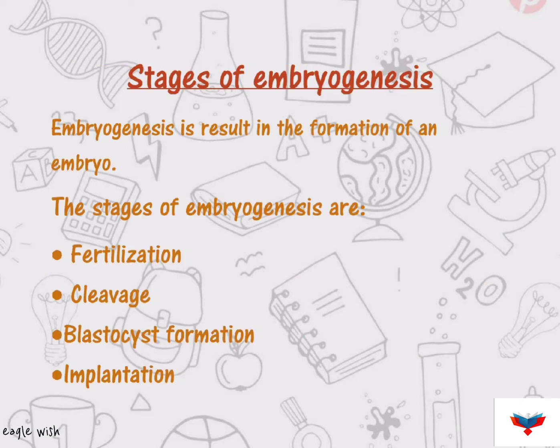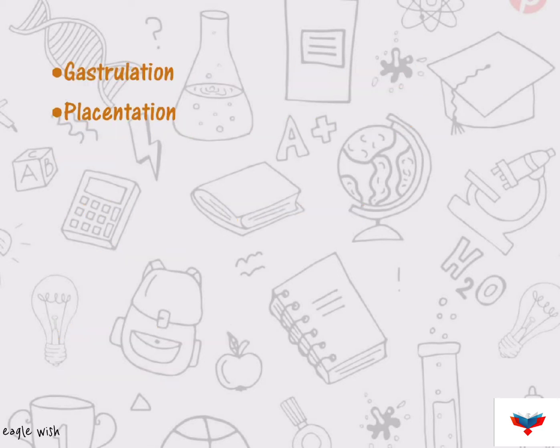The stages of embryogenesis include fertilization, cleavage, blastocyst formation, implantation, gastrulation, and placentation.